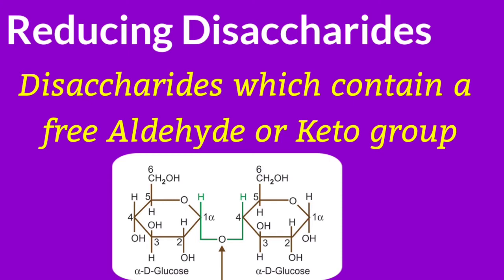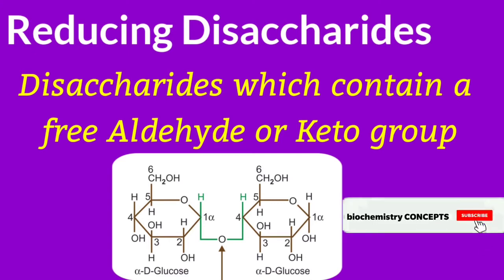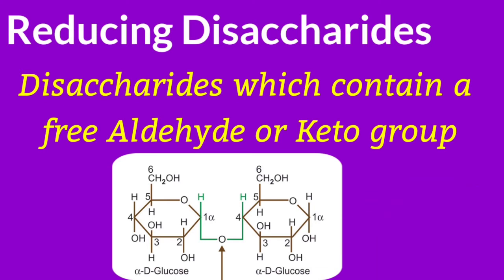The first carbon of the left glucose has the aldehyde group and forms a bond with the fourth carbon of the second glucose unit. The first carbon of the second glucose is free and not involved in any glycosidic bond, so there is one free functional group in the disaccharide — such disaccharides are called reducing disaccharides.